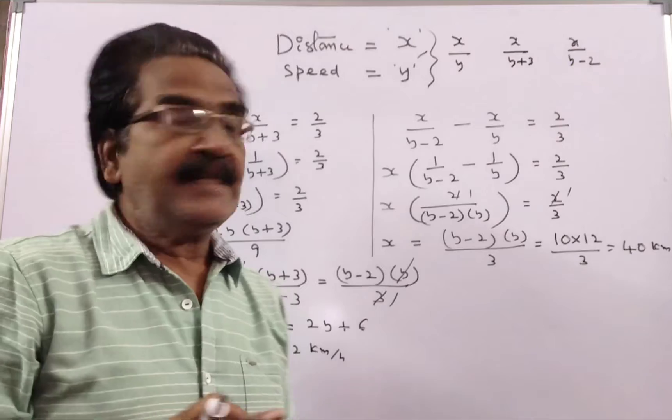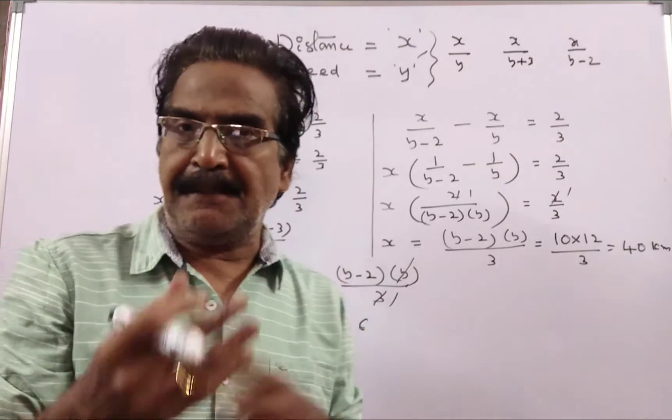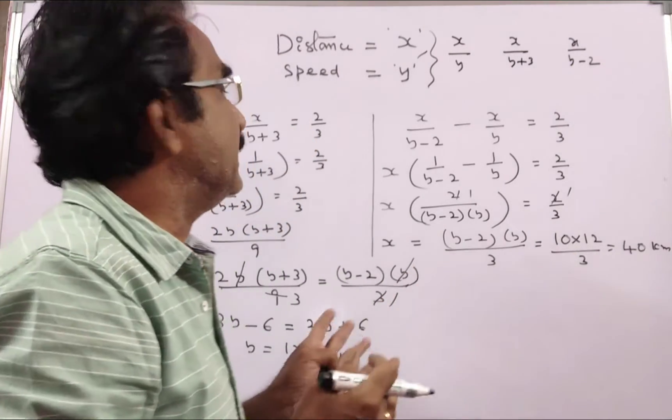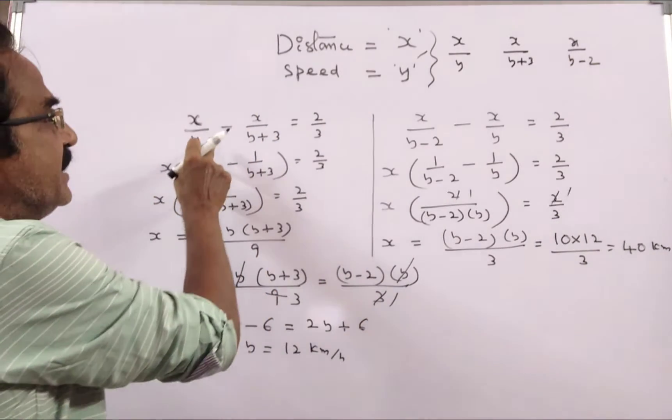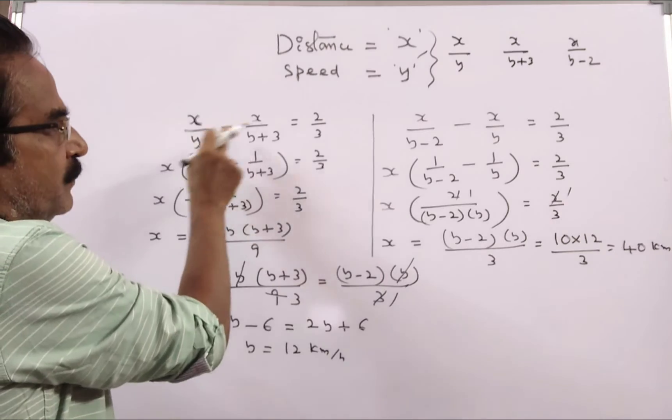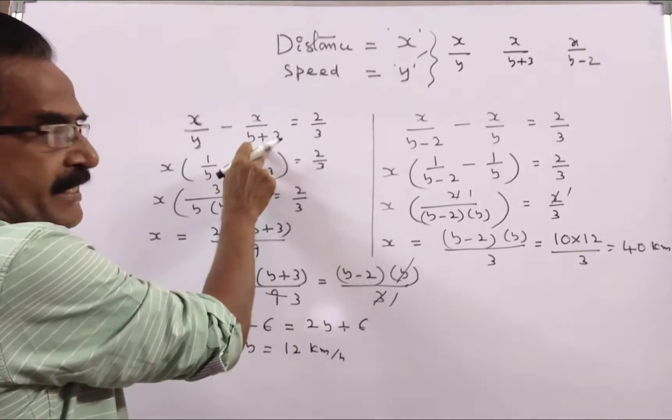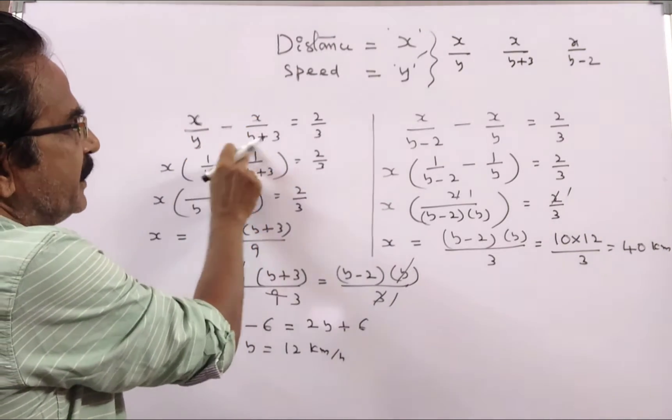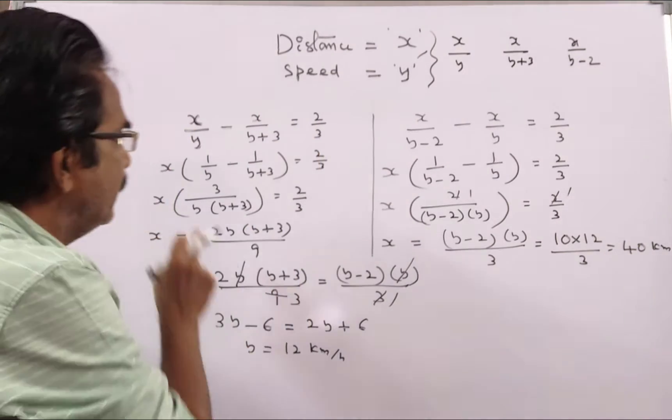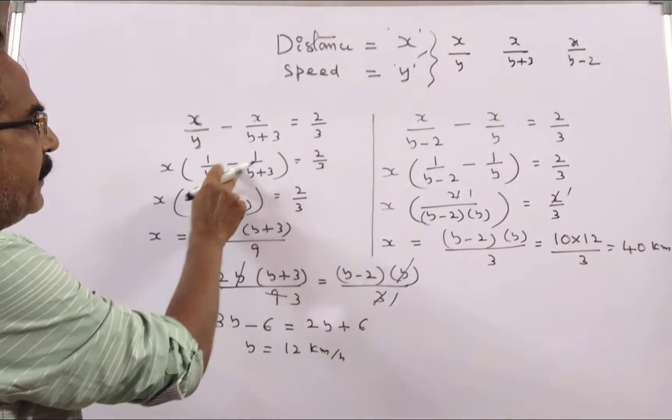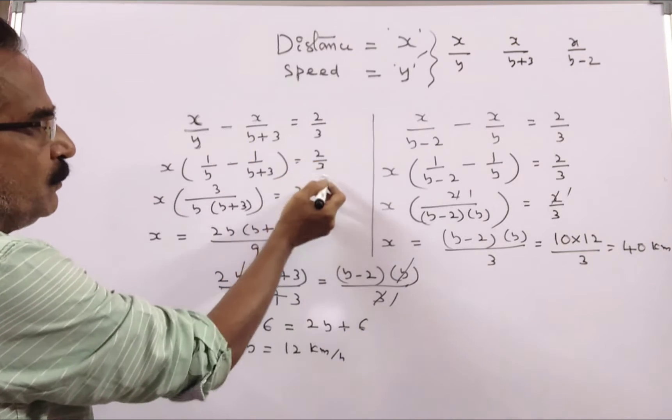And it is given that if he moves at 3 kmh faster, then it takes him 40 minutes less. So here is the equation. See, this is normal time. This is the time taken with increased speed. The difference between these two is 40 minutes, that is 2 by 3. So x into 1 by y minus 1 by y plus 3 is equal to 2 by 3.